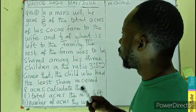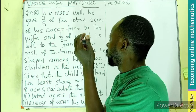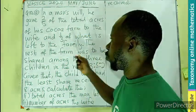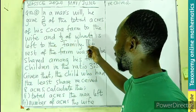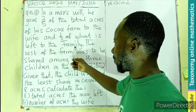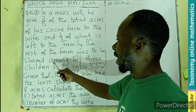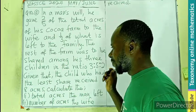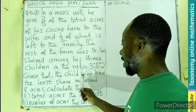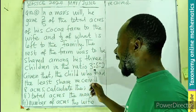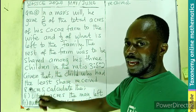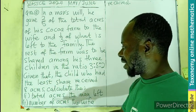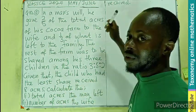So in a man's will, he gave two-fifths of his total acres of land of his cocoa farm to the wife and gave one-third of what is left to the family. The rest of the farm was to be shared among his three children in the ratio 3 is to 5 is to 2. If given that the child who had the least share received 8 acres, we have to calculate the total acres the man left, then the number of acres the wife received.